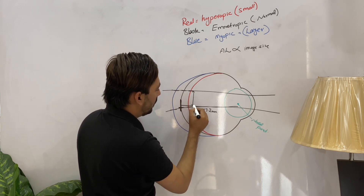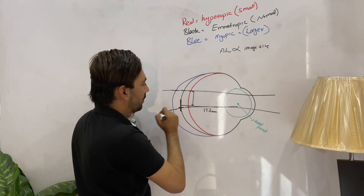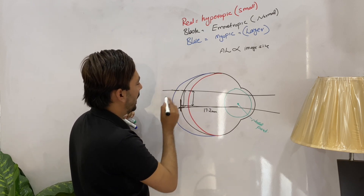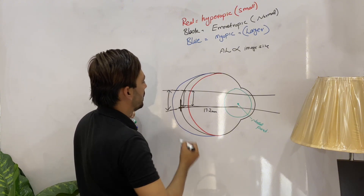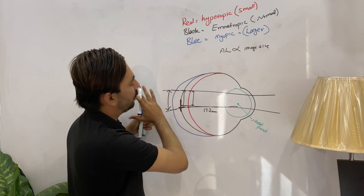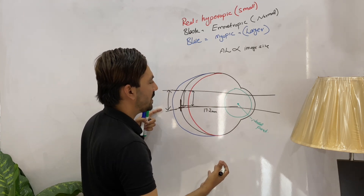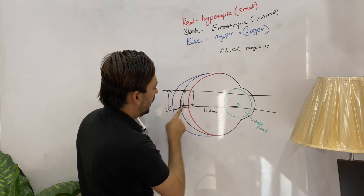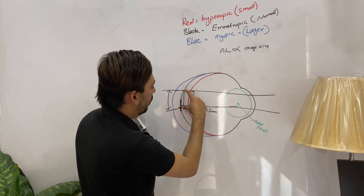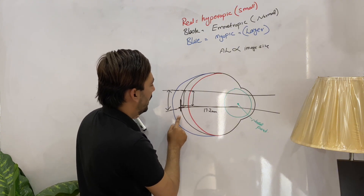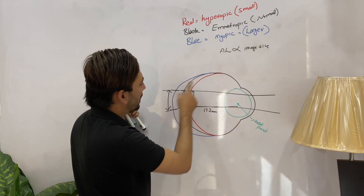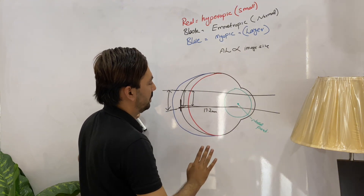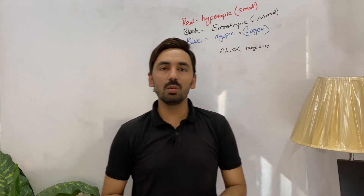Whenever the axial length decreases, the image size decreases; whenever the axial length increases, the image size increases. In the hyperopic eye the image size is small because the axial length is small. In the emetropic eye the image size is larger than in the hyperopic eye. In myopia the image size is maximum because the axial length is maximum. They are directly proportional to each other, and we can calculate image size using a basic formula.